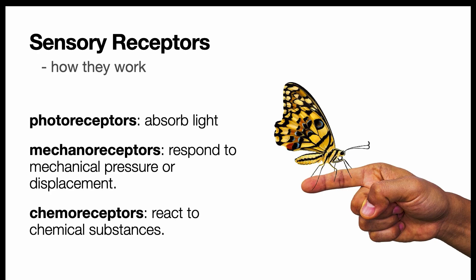Sensory receptors can also be categorized according to how they work, also referred to as functional receptor types. There are more than just the three types listed here, but three examples include photoreceptors, which work by absorbing light, such as in vision.